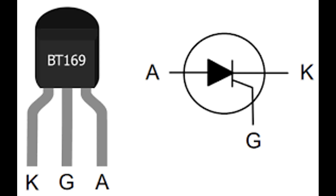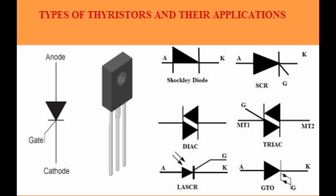The operation of a thyristor involves its ability to switch between conducting and non-conducting states based on the control signal applied to its gate terminal. Operating modes: Forward blocking mode (off state), Forward conducting mode (on state), and Reverse blocking mode. Forward blocking mode condition: a positive voltage is applied to the anode with respect to the cathode, but no gate signal is applied.